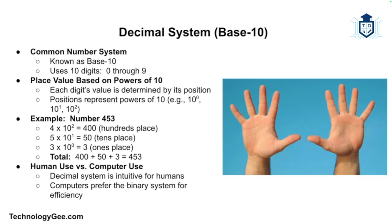For example, the number 453: the 4 represents 400s or 4 times 10 to the second power which equals 400, the 5 represents 50 or 5 times 10 to the first power which equals 50, and the 3 represents 3 ones or 3 times 10 to the 0 power which equals 3. So 453 in decimal equals 400 plus 50 plus 3. While the system is great for human use, computers find it less efficient because they operate electronically in a way that's better suited to a binary system.